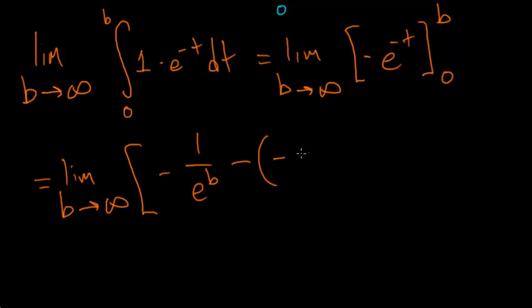So we have minus e to the 0, and anything to the 0 power is 1, so this is just minus negative 1. And as b approaches infinity in this expression here, the denominator gets bigger and bigger while the numerator stays constant. So this term here is going to approach 0.